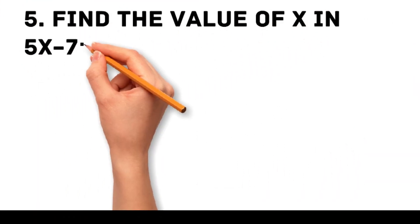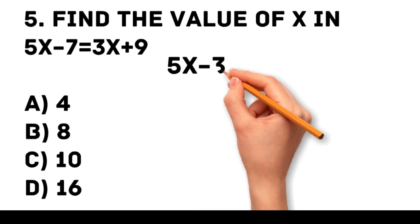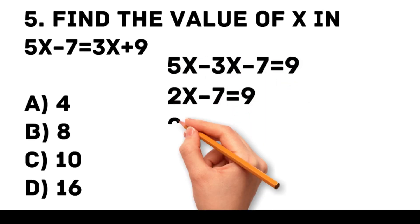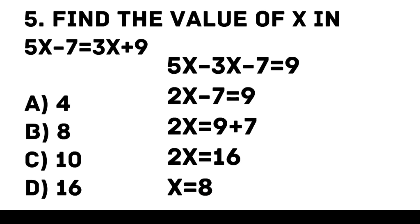Question 5. Find the value of x in 5x minus 7 equals 3x plus 9. A. 4. B. 8. C. 10. D. 16. First, get all x terms on one side. 5x minus 3x minus 7 equals 9. 2x minus 7 equals 9. 2x equals 16. x equals 8.